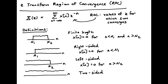We need a few definitions of different types of sequences we might be working with to take the Z-transform of. A finite length sequence is a sequence for which X of n is 0 outside of some N1 and N2 region. A right-sided sequence is 0 to the left of some integer N1 and non-zero to the right. A left-sided sequence goes to 0 after some integer value N2. And a two-sided sequence is just not left or right-sided.